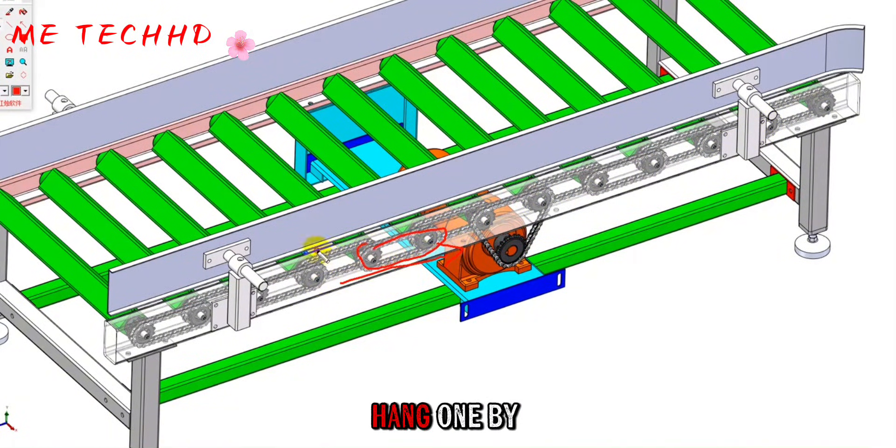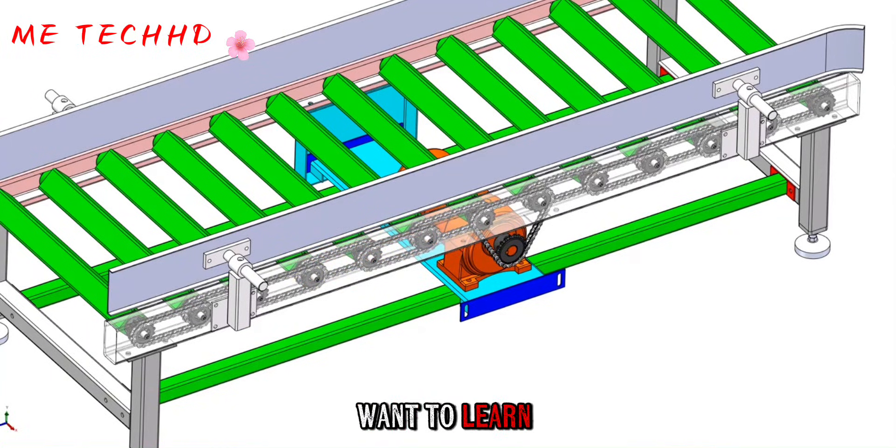Generally, it is a way to hang one by one in a solid line. If you want to learn this design well, let's look at why the motor is put in the middle. It is because the chain and the bearing inside will be damaged during the delivery process.